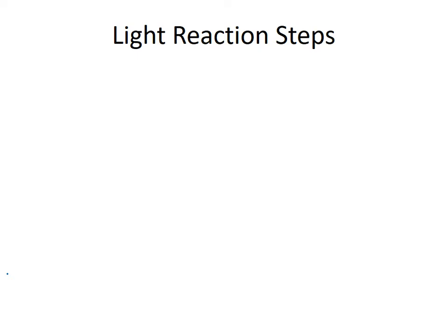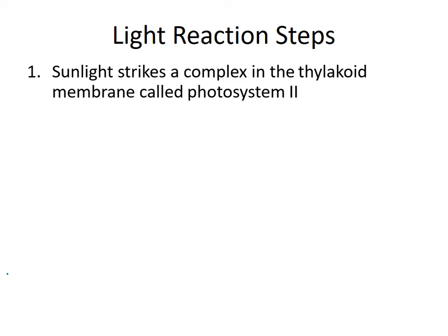How I'm going to run this video: I'm going to pop up a step of text — you need to write that down — and then I'm going to switch over to a blank screen and draw that step. We'll keep flip-flopping between a line of text and what it looks like on a diagram. First thing that happens: sunlight strikes a complex in the thylakoid membrane called photosystem 2. Please pause this as you need time to write this stuff down.